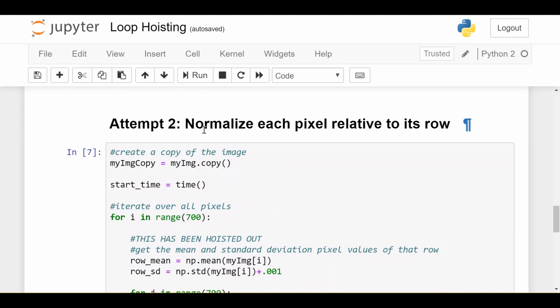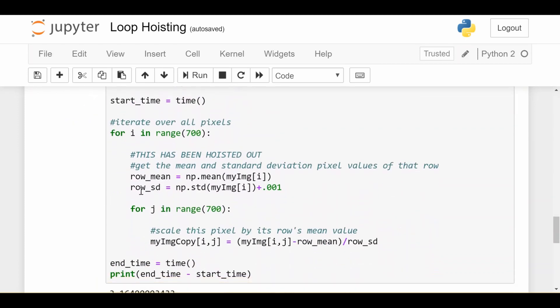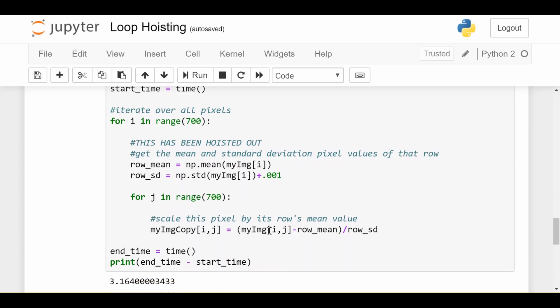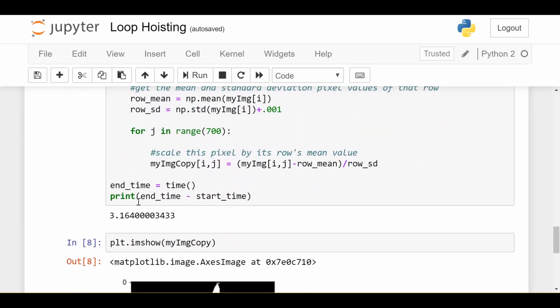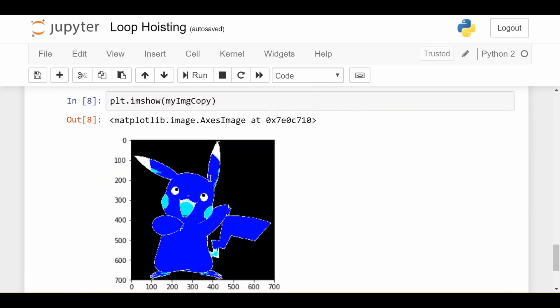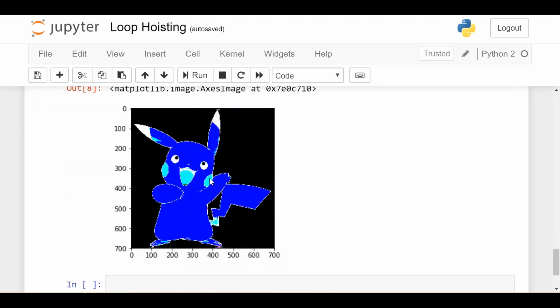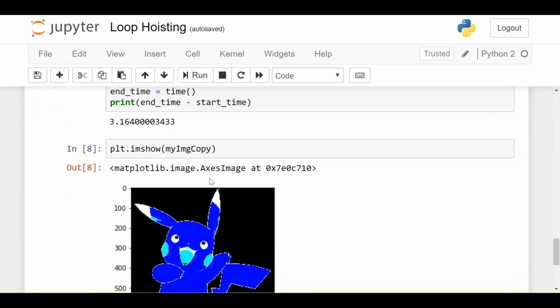So attempt two is normalize each pixel relative to its row again. The only change we make is we take those two lines, which were happening in every iteration of these two for loops, and move it out one layer. So that it's only happening once based on when i changes. So if i is 0, we calculate the row mean and row standard deviation for the 0th row or the first row, I guess. And then we calculate this my image copy i j using those values for every single j from 0 to 699. That's the only change we made. We calculate the time again. We see that we went from almost a minute to just about three seconds. So we're getting a crazy speed up here as well. And we show the image. We see it's the exact same image we got before. So the correctness is true in both cases. It's just that in one case, it took us about 20 times faster.